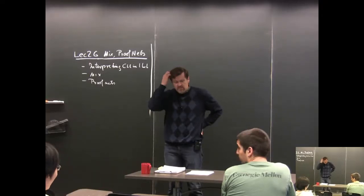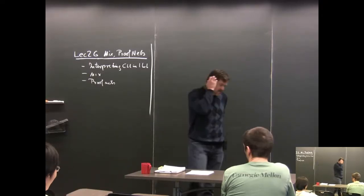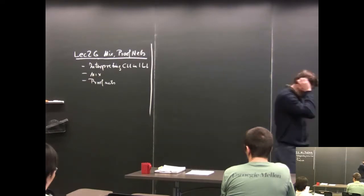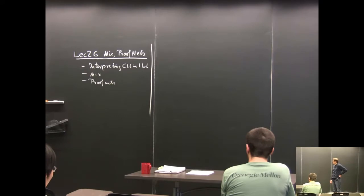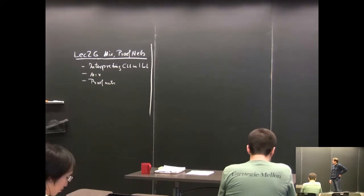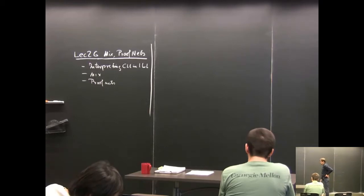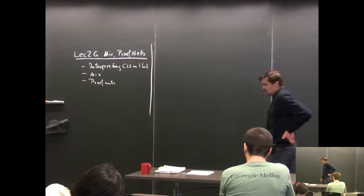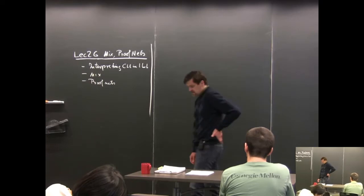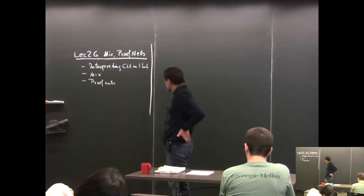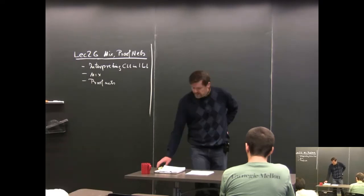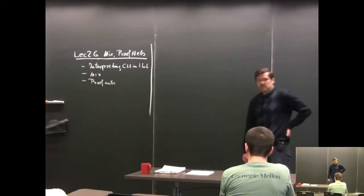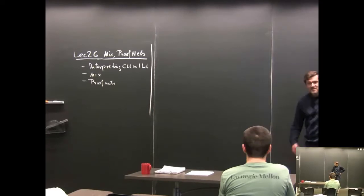Today we have two topics. The first is continuing the interpretation of classical linear logic and intuitionistic linear logic. Then we'll talk about mix, which is a rule that has sometimes been proposed as an extension of linear logic. And then we'll talk a little bit about proof nets — I only know a little bit about it, so I can only talk a little bit about it.